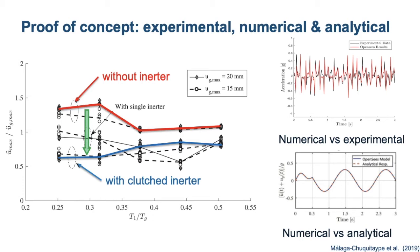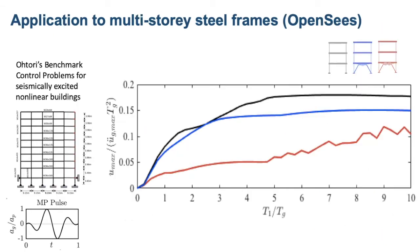We performed a series of numerical, experimental and analytical studies. We also later implemented this device numerically into some control problems, benchmark control problems. In this case, for example, I'm presenting the results for a nine story steel building subjected to a Makris-Roussos and Papageorgiou pulse at its base. The graph represents in the vertical axis the maximum deformation of the building normalized by the energetic length of the ground motion. In the horizontal axis, we have a ratio of periods, the period of the structure normalized by the period of the ground motion. The black curve represents the unprotected structure and the red curve corresponds to the clutched inerter system. You can see there is a massive reduction in deformations and therefore in damage.